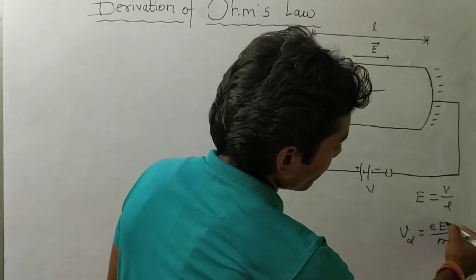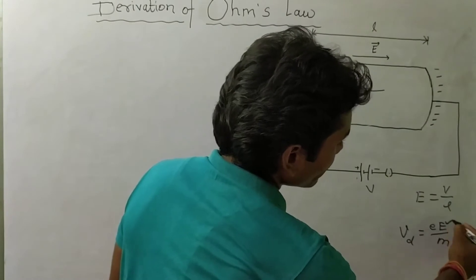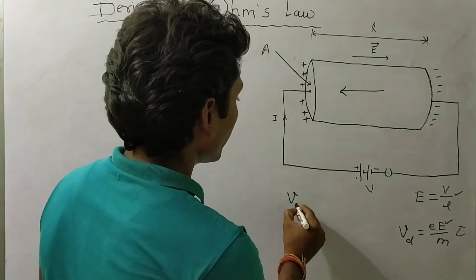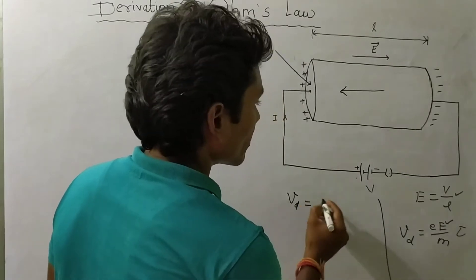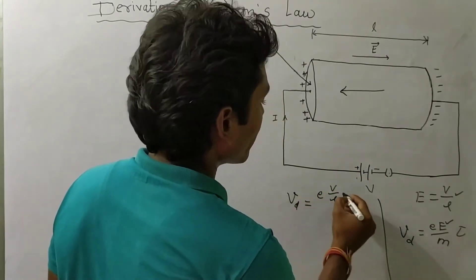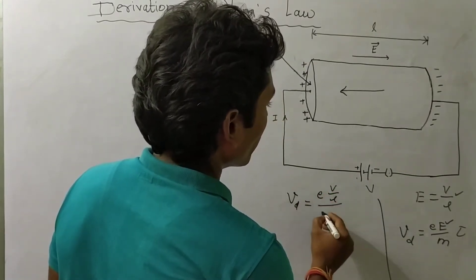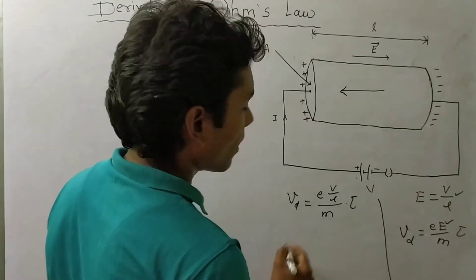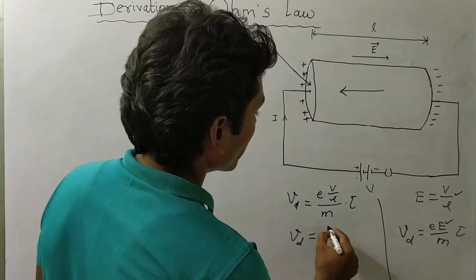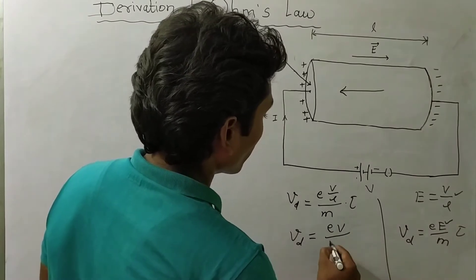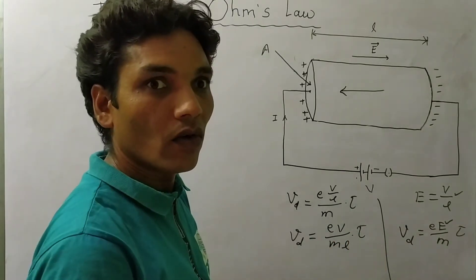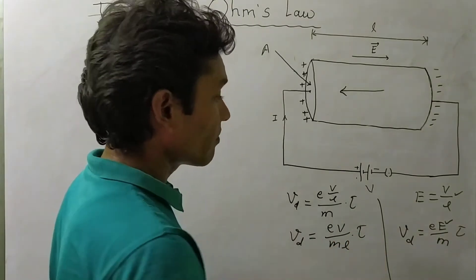On putting the value of E from the relation E = V/L into the drift velocity equation, Vd = eV / (mLτ). This is the expression for drift velocity.